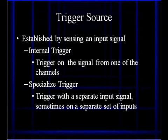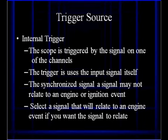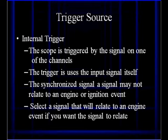We can trigger in several ways. Internal triggering triggers from one of the channels and we have to select the channel. Specialized triggering can involve selecting a different input or using a totally different input to the scope. With internal triggering, the scope triggers on one of the selected channels — it uses the input signal itself as the trigger and synchronizes the signal. It can relate to an engine event, but you select the signal that will relate to what you want it to relate to.